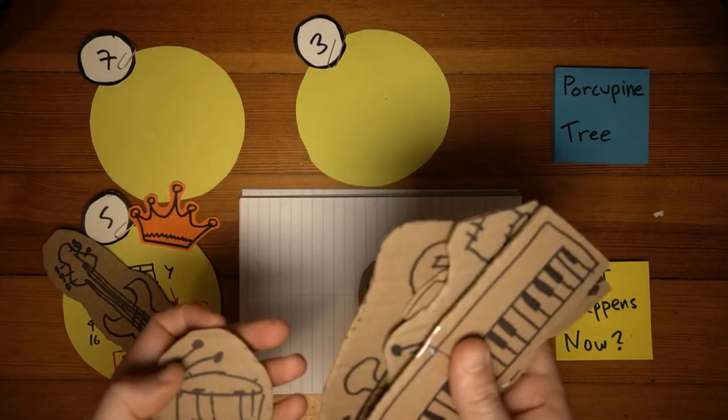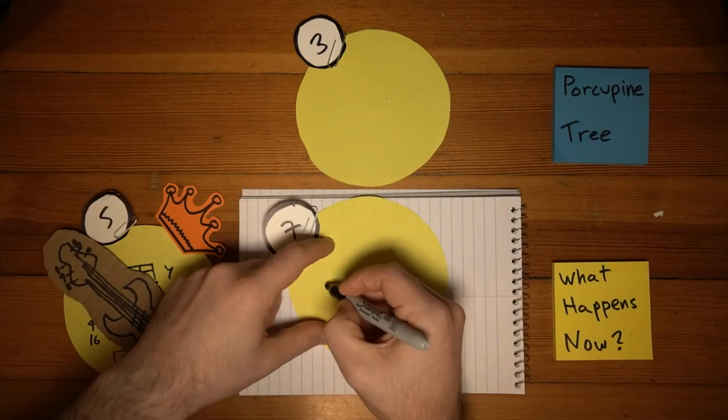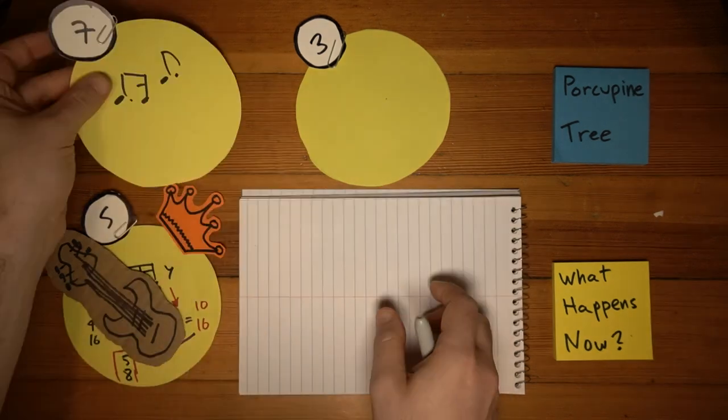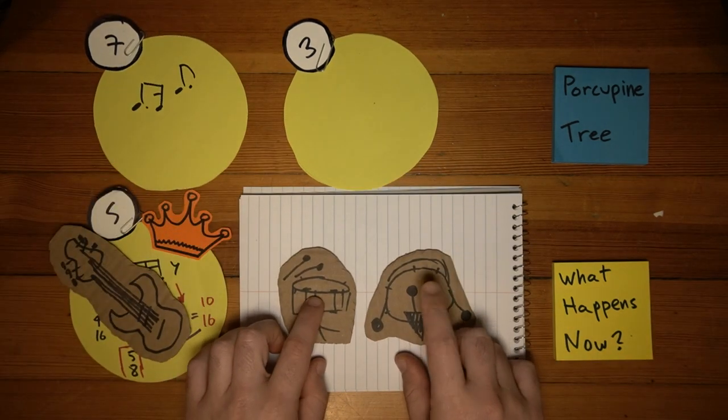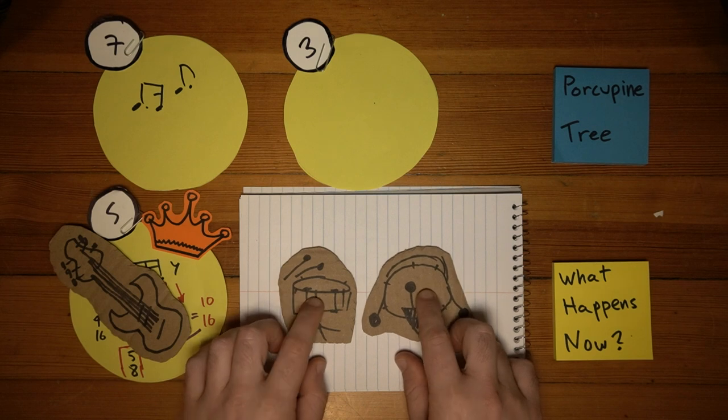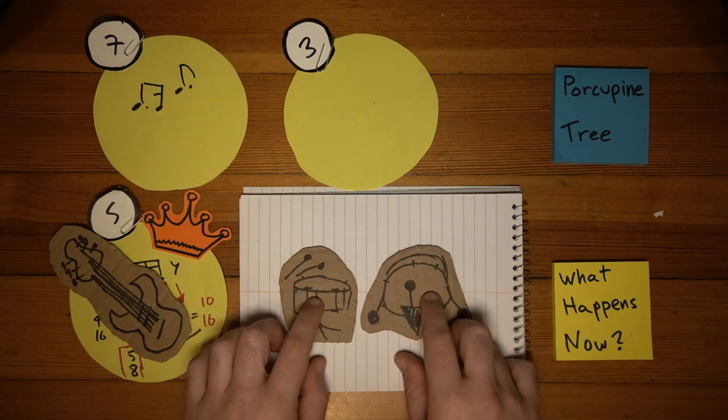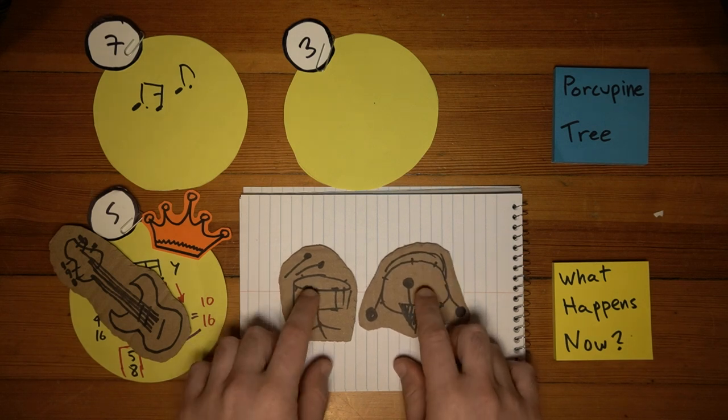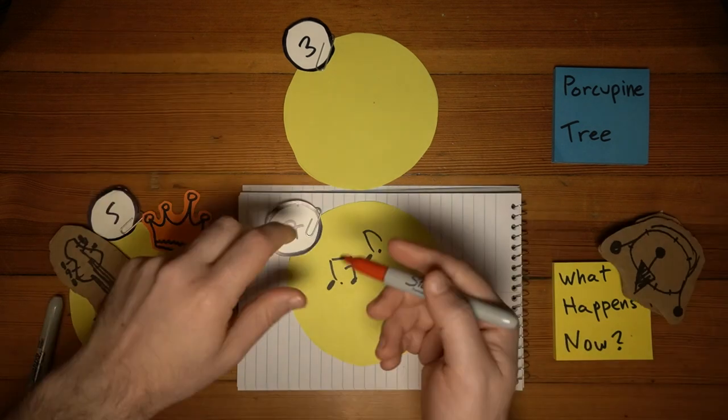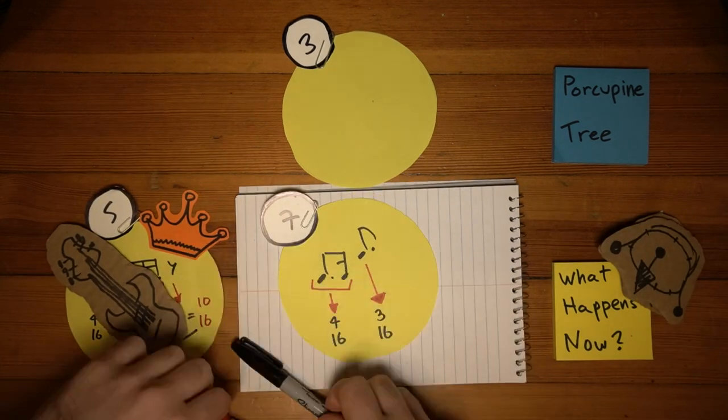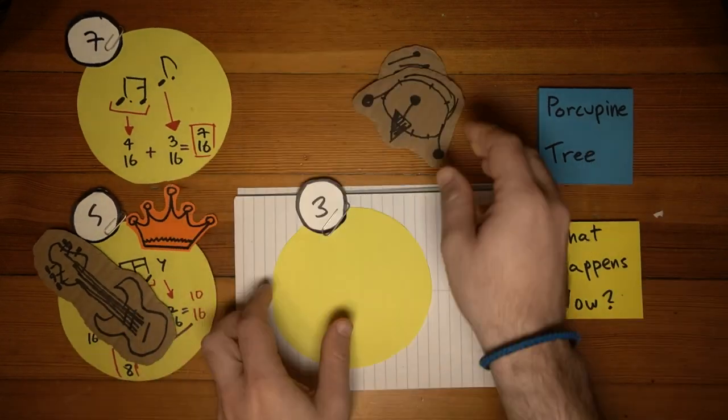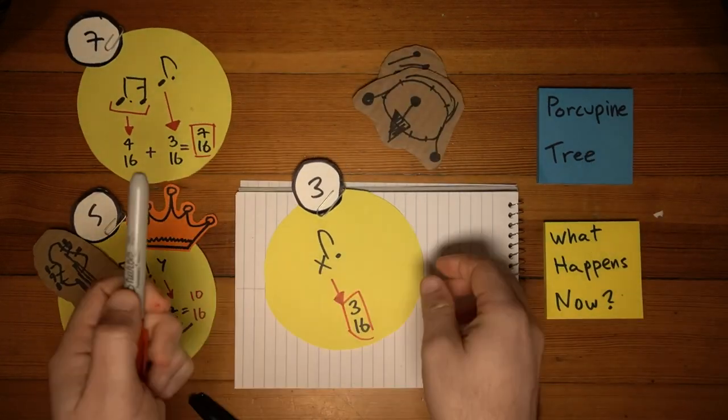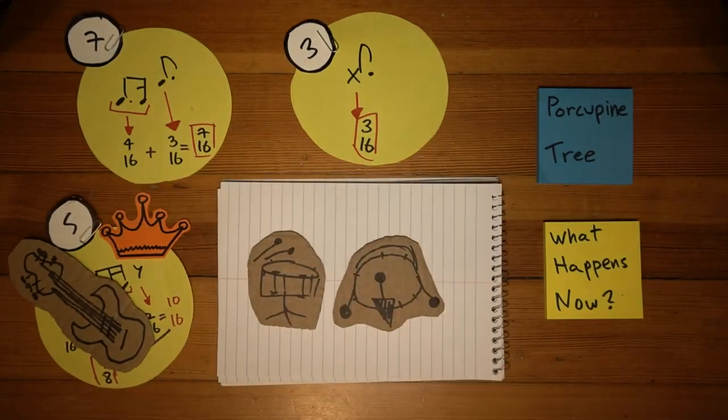Soon enough the drums come in, playing everything but 5. The kick and snare groove are in 7. And remember we discussed the hi-hat and ride cymbal being the organizer of the whole groove? The ride plays a pattern in 3. Which is what makes this groove so disorienting.